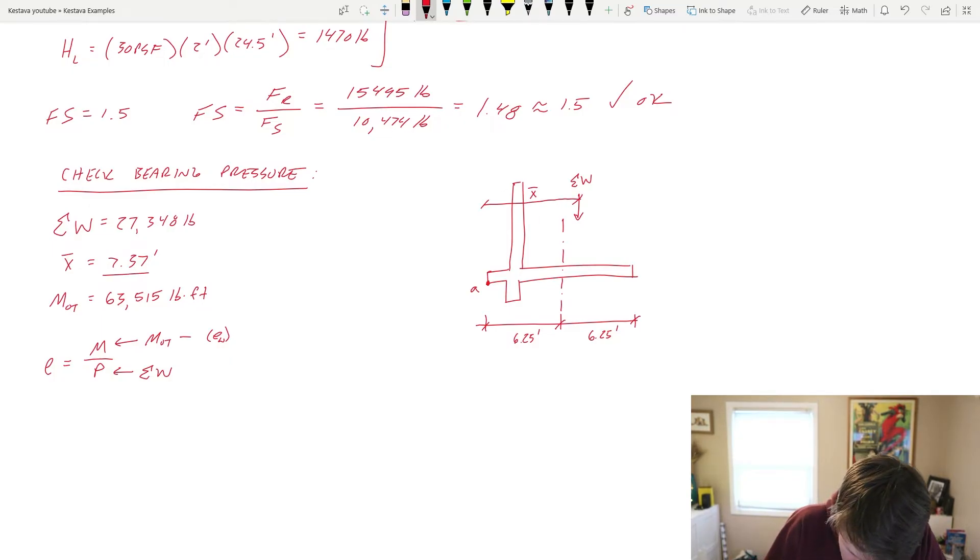And we have our summation of mass with our eccentricity, which is X bar. That X bar, we know, is 7.37 feet, which means it's beyond the center line of our midpoint of our base. So that creates an eccentricity, which is E_W.